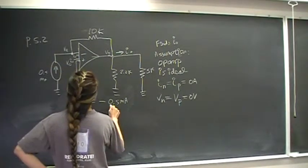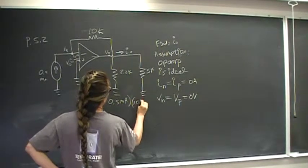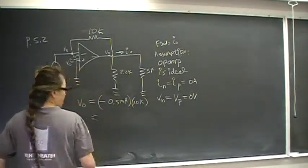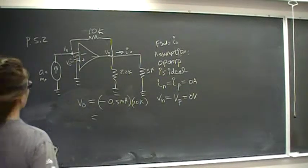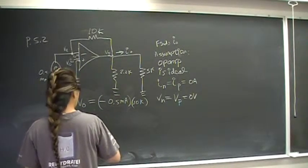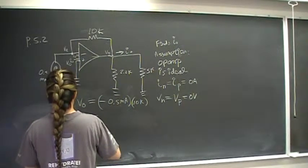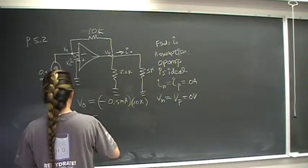And V is I, and then times 10K. So that should be, that gives us negative, negative 0.5 milliamps.